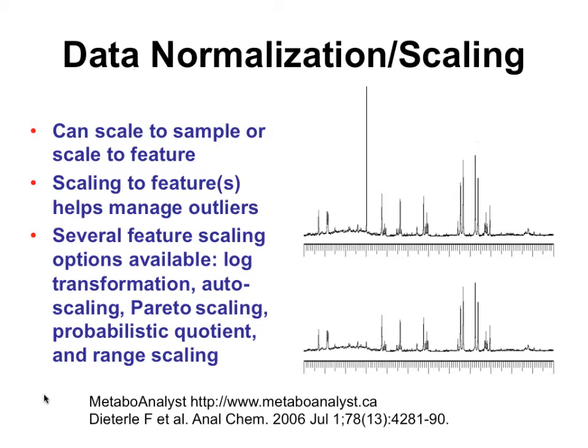So, again, this is just more about the scaling. Some of the other things which are normalization is that log transformation. So, terms like log transformation, autoscaling, Pareto scaling, probabilistic quotient scaling, range scaling, these are all actually available through MetaboAnalyst, and they're explained in a little more detail. They're ones that you typically do by trial and error. Some work, some don't, depending on the data that you have. And having something that's interactive and visual, like MetaboAnalyst, helps a lot.